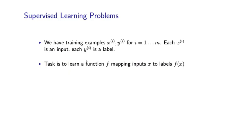So in supervised learning problems we have the following setting. We're going to assume that we have a set of training examples which I'll write as x_i, y_i for i equals 1 to m. And each x_i is referred to as an input whereas each y_i is referred to as a label.